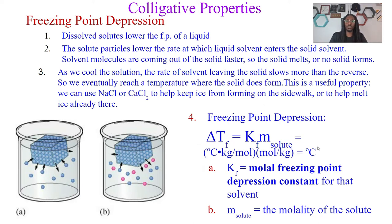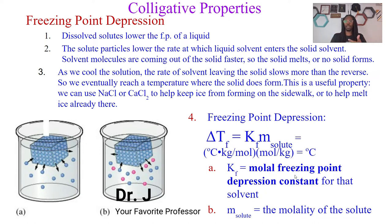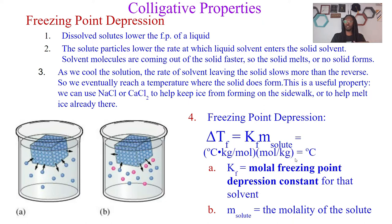Here is the equation. The equation is a change in temperature: ΔT equals our K, the molar freezing point depression constant for the solvent. Whatever solvent you have, the constant remains the same. Then M — notice what this is — little m, the molality of the solute. These two terms are very similar to what we've seen before.